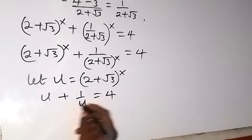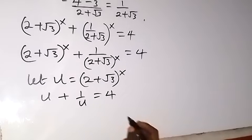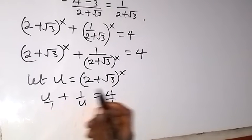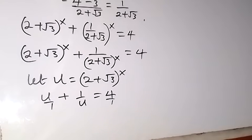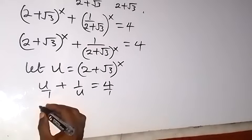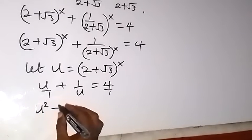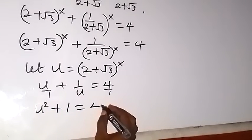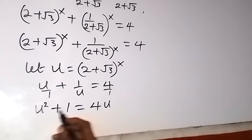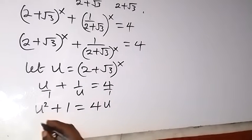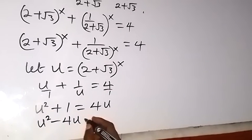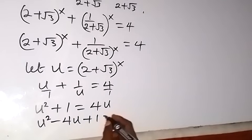From there we can clear this fraction by multiplying through by u. So multiplying each term by u gives us u squared plus 1 equals to 4u. Therefore, bringing 4u to this side to form a quadratic equation, we have u squared minus 4u plus 1 equals to 0.